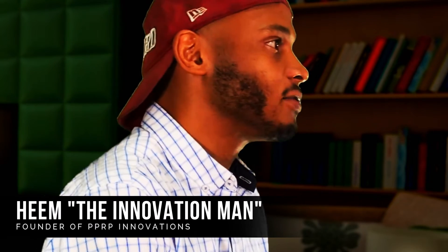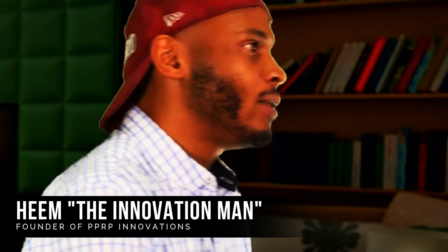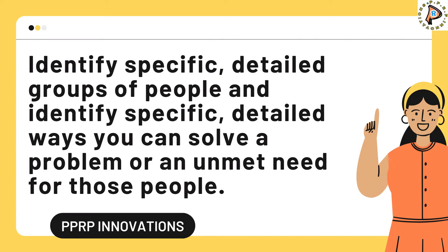To help filter your MVP ideas so that you're starting with a good group that can provide you the best chances of success, go back and review your MVP ideas list and cross off any general market ideas. The purpose of your MVP is to identify specific, detailed groups of people that you can serve with your solution, and within those people, identify specific detailed ways that your MVP solves a problem or provides a solution for an unmet need.